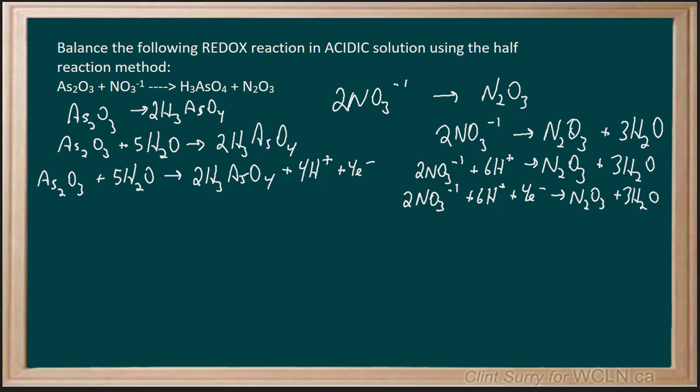Looking at that, I can see there are 4 electrons being lost and 4 electrons being gained, which makes our balancing much easier. Now we just have to combine them together, so I'm going to take the As₂O₃, that's that one, plus the 2NO₃⁻ plus 5H₂O plus 6H⁺. I'm not going to put the electrons in because we balance them.